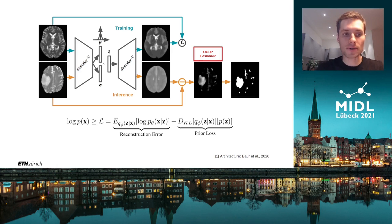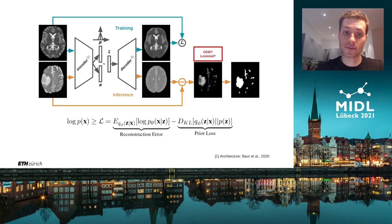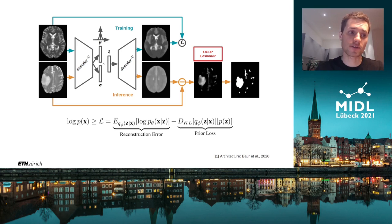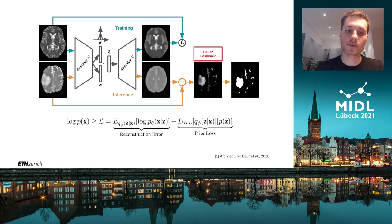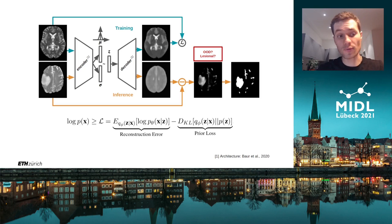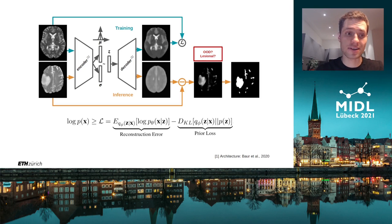Below you can see the VAE loss function, which consists of a reconstruction error and the prior loss, which is the KL divergence between the posterior and prior latent space distributions. These terms, or their full combination, are commonly used as anomaly detection scores.